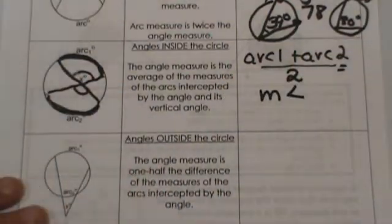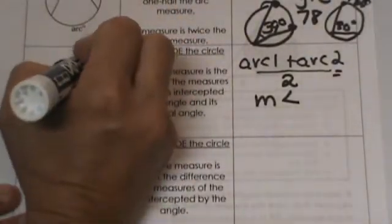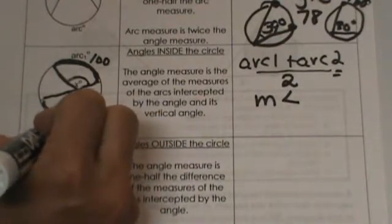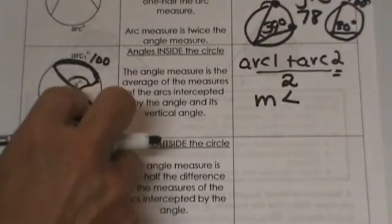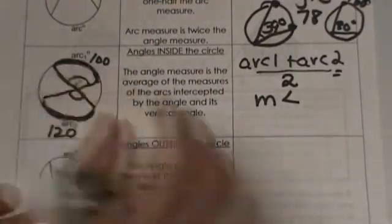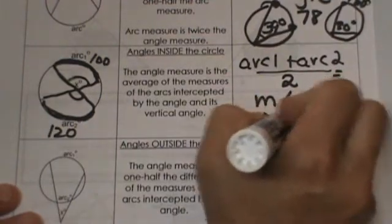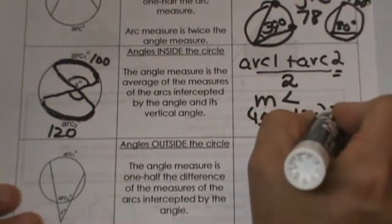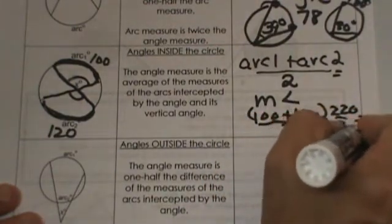Let's throw some numbers up there so you can see how this works. Let's say that the angle up here is 100 and the angle down here is 120. To find this angle in the middle I am going to take 100 plus 120 and divide them by 2. So the sum of those is 220 and 220 divided by 2 is 110.